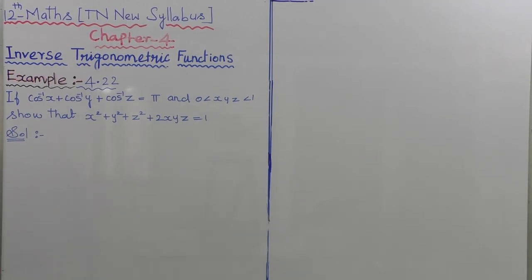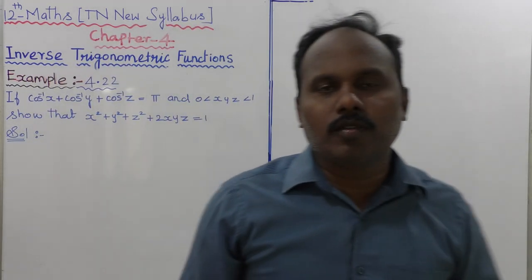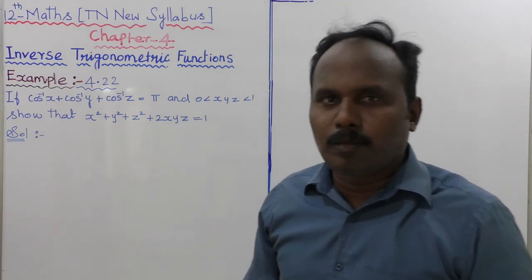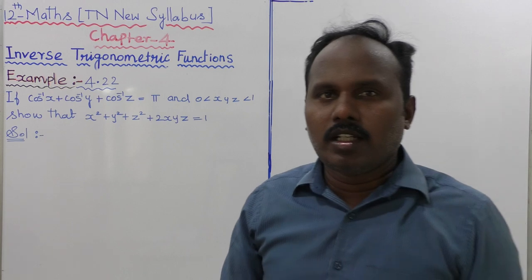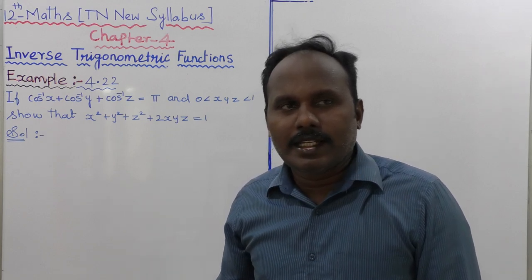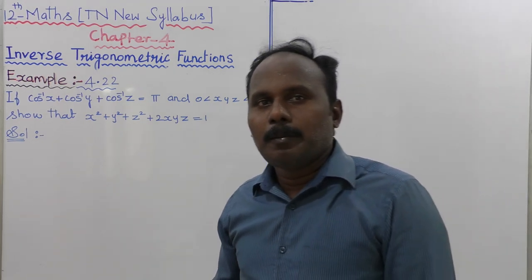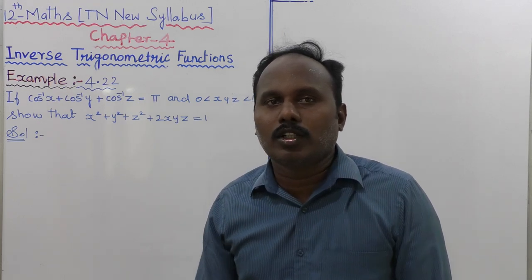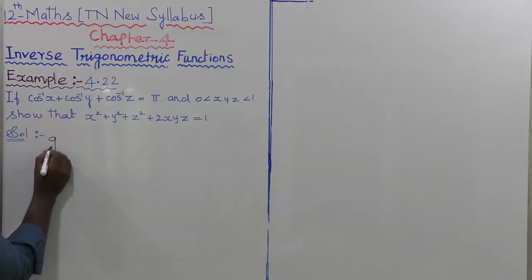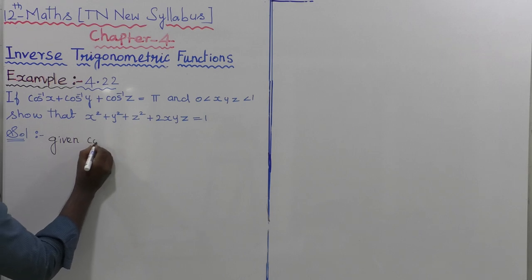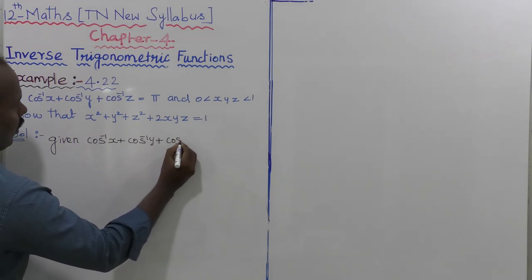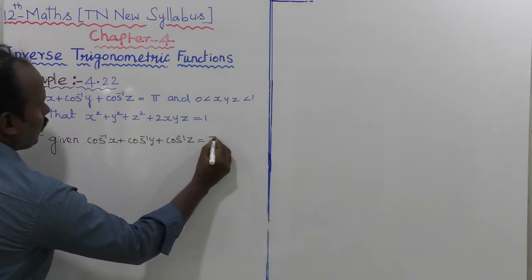Example 4.22: If cos⁻¹(x) + cos⁻¹(y) + cos⁻¹(z) = π, where 0 < x, y, z < 1 (the limit of x, y, z is 0 to 1), show that x² + y² + z² + 2xyz = 1.